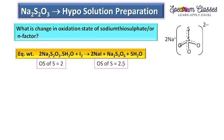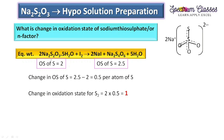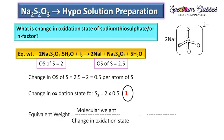So the oxidation state of sulfur on the reactant side is 2 and on the product side is 2.5. The change in oxidation state per sulfur atom is 2.5 − 2 = 0.5. However, in one formula unit of sodium thiosulfate there are 2 sulfur atoms, so we multiply 2 × 0.5, which gives a total change in oxidation state of 1 per formula unit.